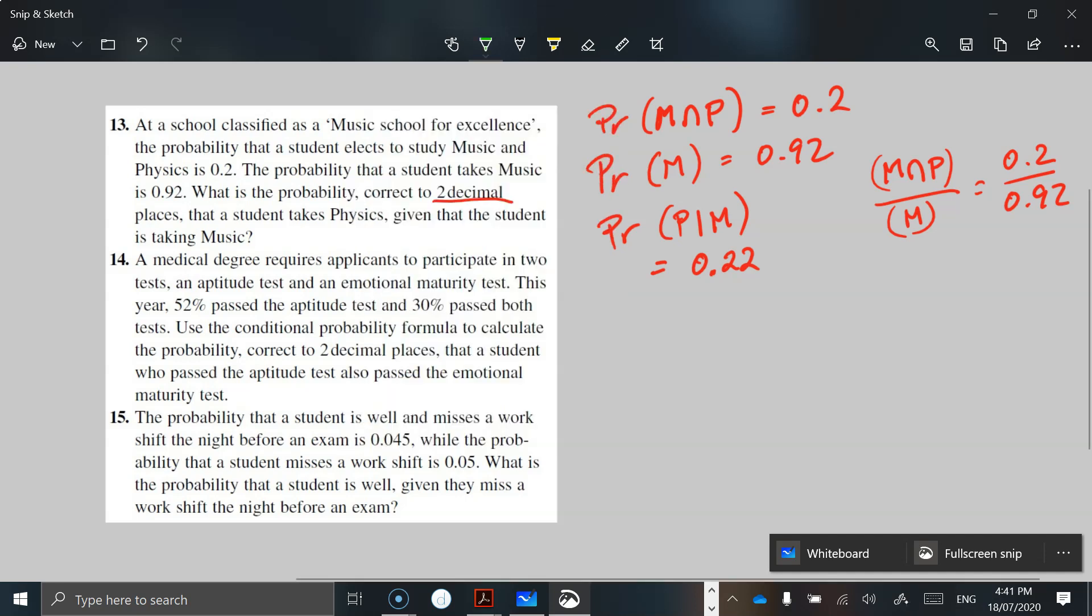So next question. We're looking at a medical degree requires applicants to participate in two tests, an aptitude test and an emotional maturity test. This year, 52% passed the aptitude test and 30% passed both tests. So if we're looking at aptitude and maturity, we're looking at 30%. So I might put 0.3 as the answer for that. And then the probability for just the aptitude is 0.52 in decimal form.